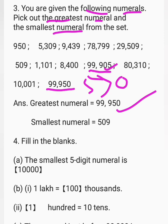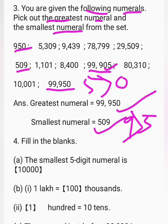To pick out the smallest numeral, observe which number has the least number of digits. Two numbers — 950 and 509 — both have three digits. Comparing their hundreds place: 950 has 9 and 509 has 5. Since 9 is greater than 5, the smallest numeral is 509.